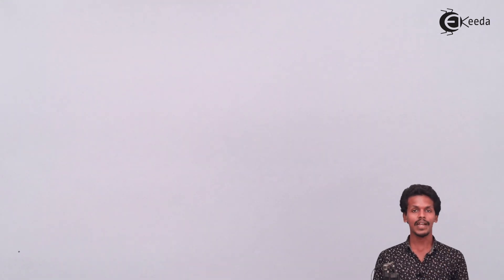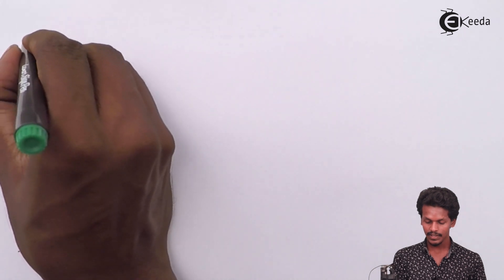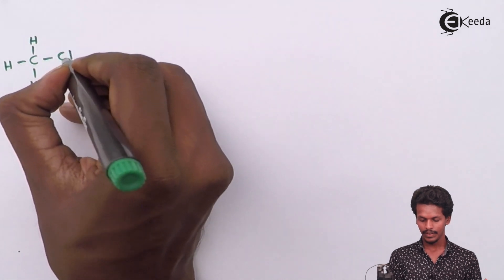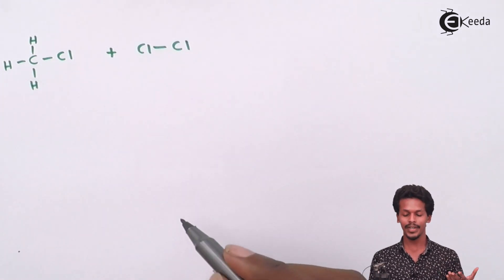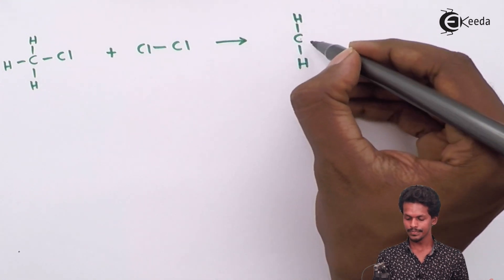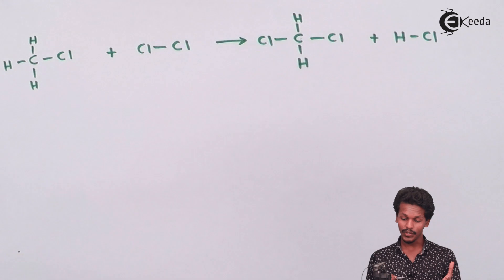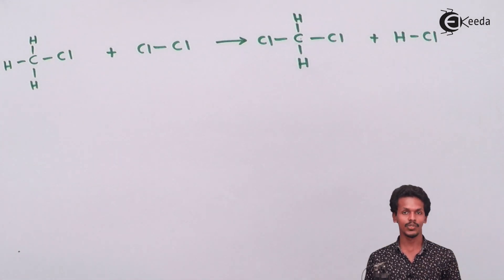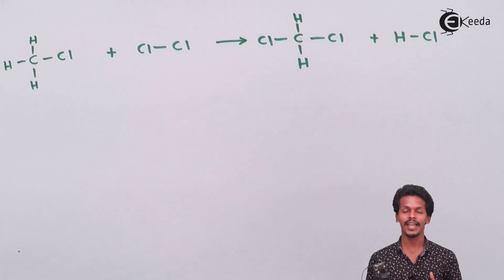Before calculation, we should represent the reaction structurally, because that makes it easy to identify how many and which kinds of bonds are present in the reactants and products. CH3Cl can be drawn showing its bonds, plus Cl2 as the Cl–Cl bond. The products CH2Cl2 and HCl are similarly drawn showing the H–Cl bond.